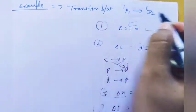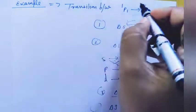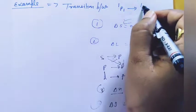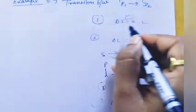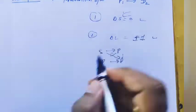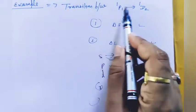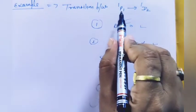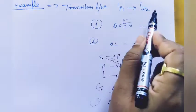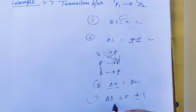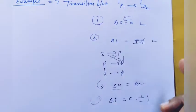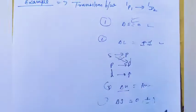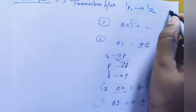Checking the transition 1P1 to 1D2: it is singlet to singlet, so delta S equals zero — allowed. P to D means delta L equals 2 minus 1 equals 1, satisfying delta L equals plus or minus 1 — allowed. The J values: 2 minus 1 equals 1, satisfying delta J equals 0, plus or minus 1. All rules are followed, so this is an allowed transition.